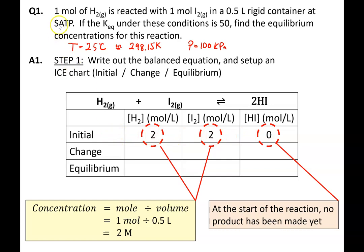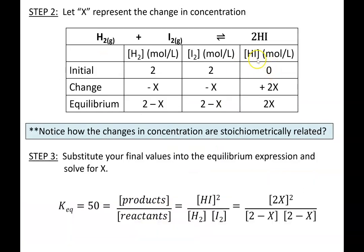Since the question only states that 1 mole of hydrogen gas and 1 mole of iodine gas is placed in the container, it makes no mention of hydrogen iodide. We can assume zero HI is present at the beginning because the reaction has not started yet. Because there is no hydrogen iodide, we cannot go in the reverse direction — only the forward direction is possible, which is why the change in concentration is negative, negative, and positive.